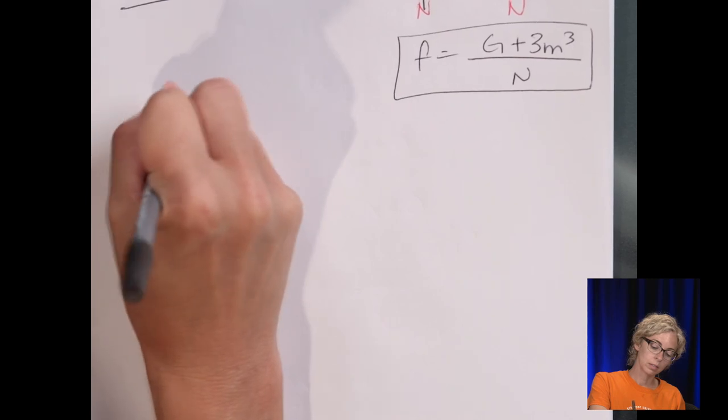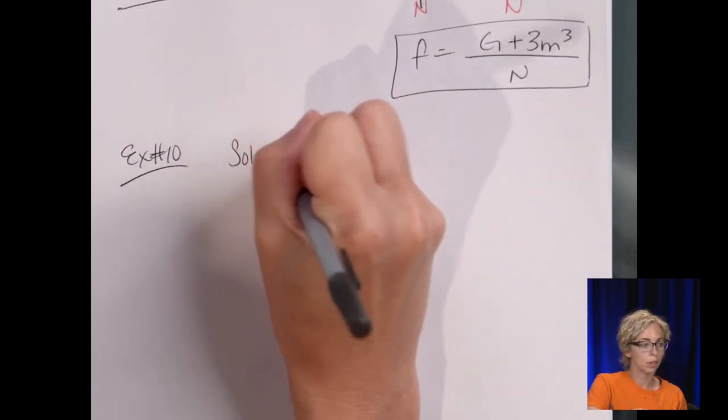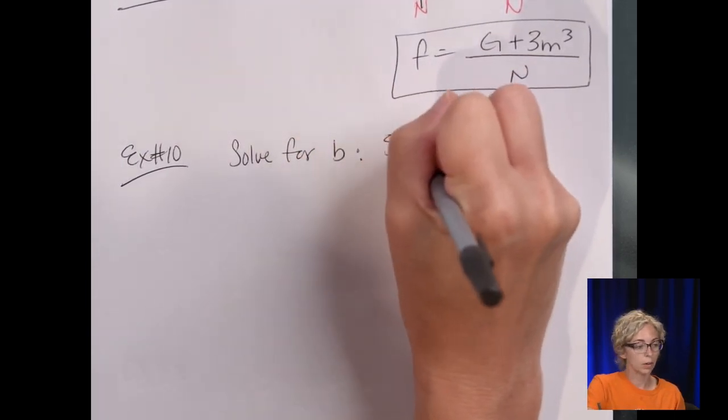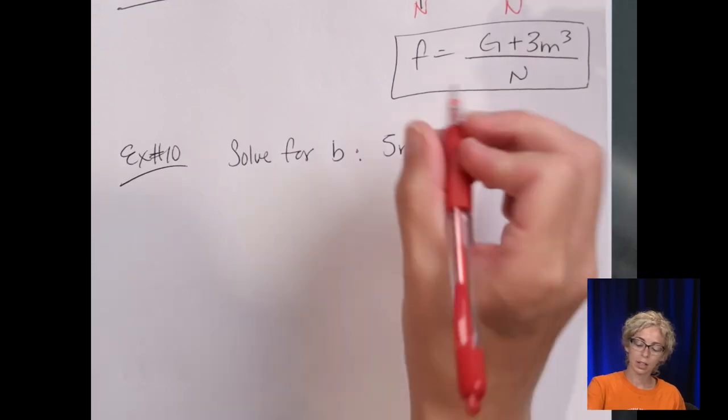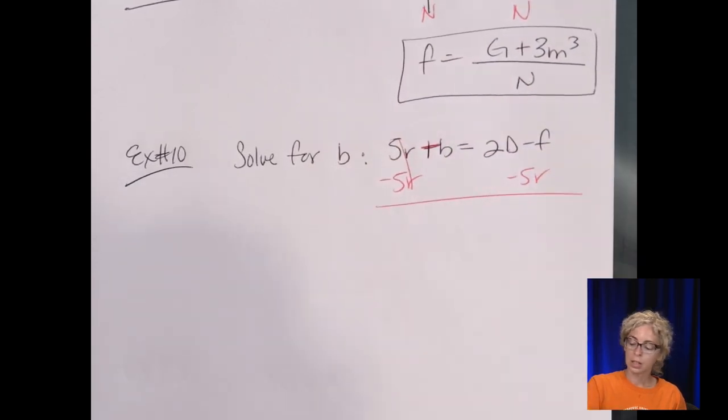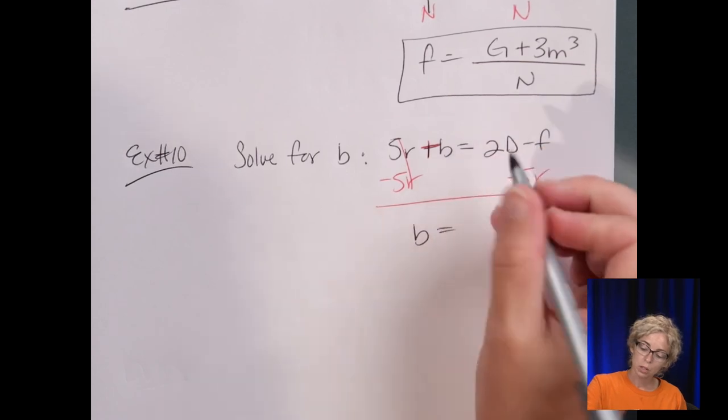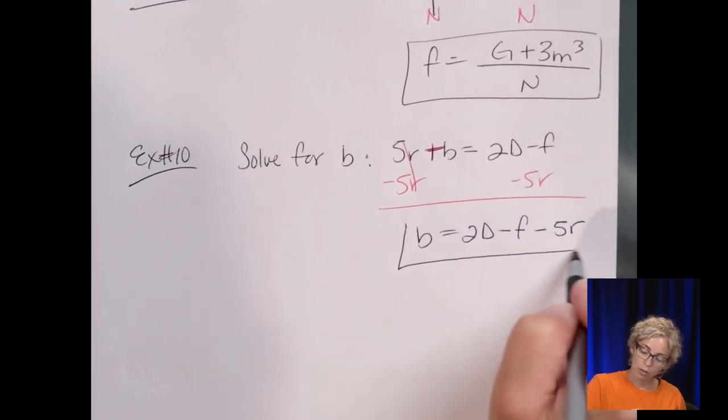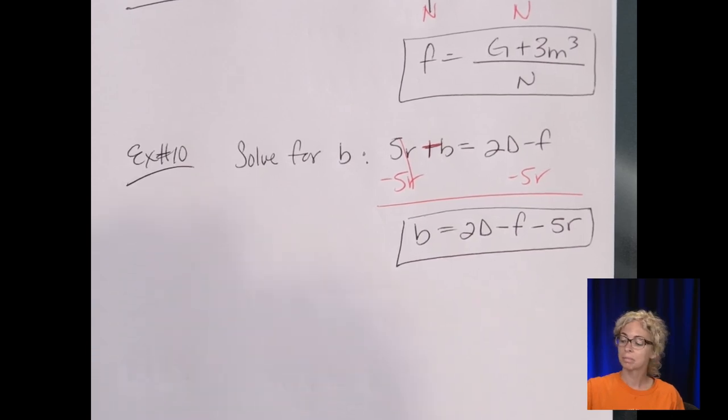And our last one, scroll here to another problem. We're going to solve for b. And the equation is 5r + b = 2d - f. So, if I'm going to solve for b, again, right now, we're adding 5r. So, I need to subtract 5r. So, now I end up with b equals. Now, you can't combine an r term with an f term or a d term. So, you simply just write it in order. So, 2d - f - 5r in order from left to right. And that finishes our notes for practice number 1. Have a good day.